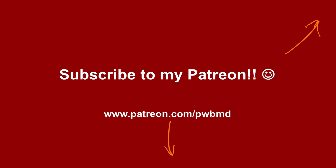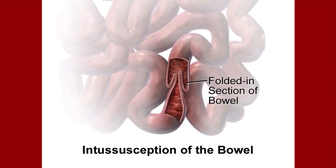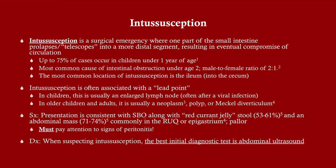Intussusception is a surgical emergency. What is going on is an invagination of a proximal part of the small bowel that telescopes into the distal segments. This is usually small bowel — most commonly it is the ileum, which goes into the large bowel, so it's a small bowel–large bowel phenomenon. This almost always involves the small bowel in some way.